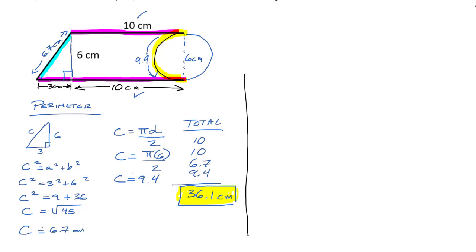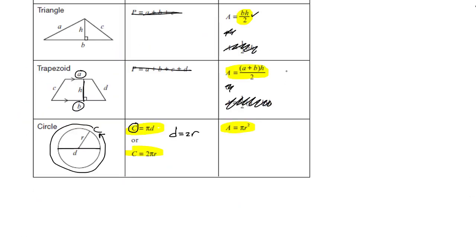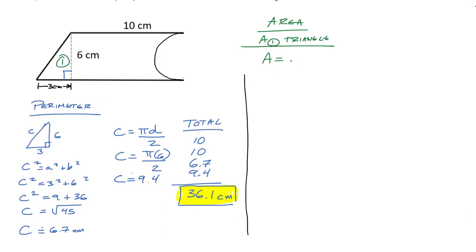Now let's find the area. For area we need the entire area of each shape piece. Starting with the triangle — Area 1: the formula is base times height divided by two. The base is 3 and the height is 6, so 3 times 6 equals 18, divided by 2 gives 9 centimeters squared. Notice area is a two-dimensional measurement so we use squared units, unlike perimeter.